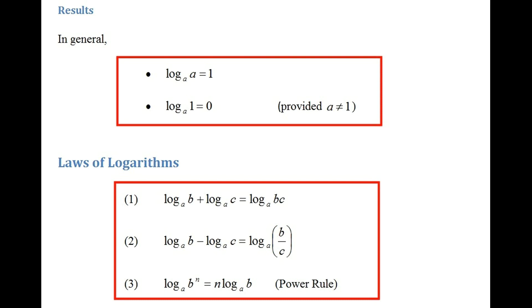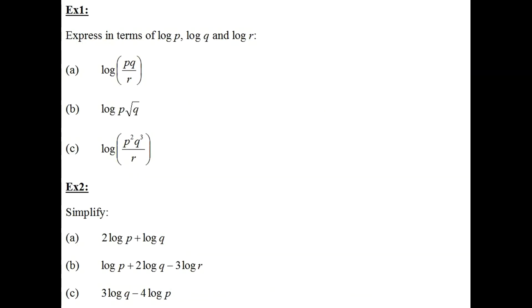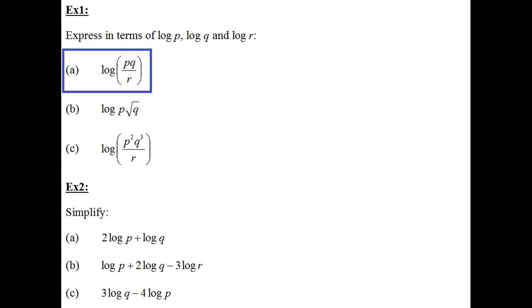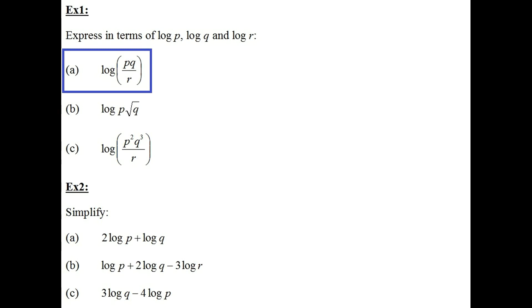Now with these laws, let's try some examples. Example number 1: we're going to express in terms of log p, log q and log r. In part a: log of pq over r. So let's write log of pq over r in terms of log p, log q and log r.